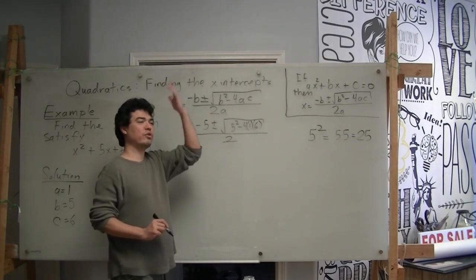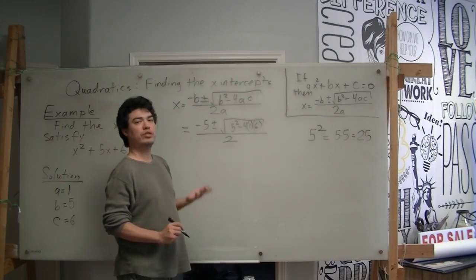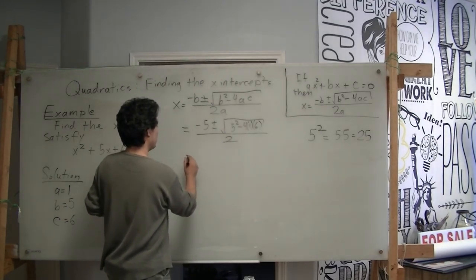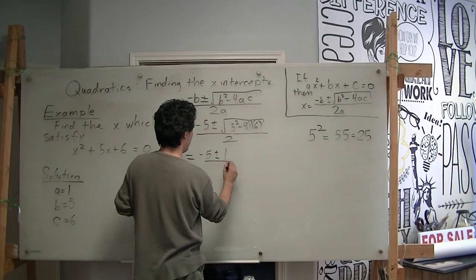And we ask ourselves, what number times itself gives us 1? And the answer there is 1. So we get negative 5 plus or minus 1 over 2.